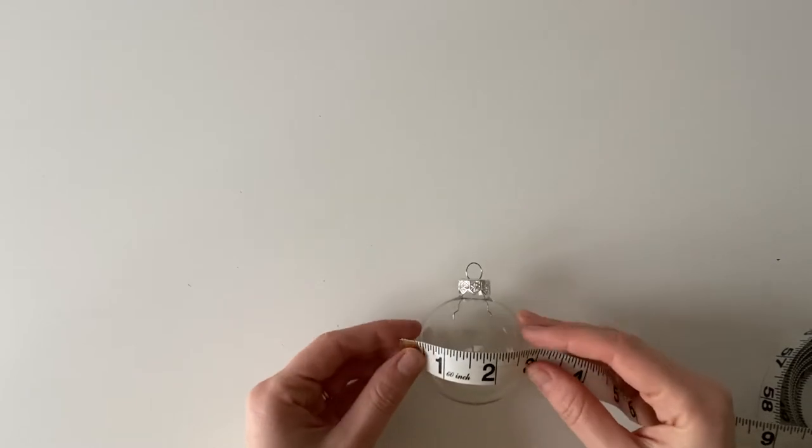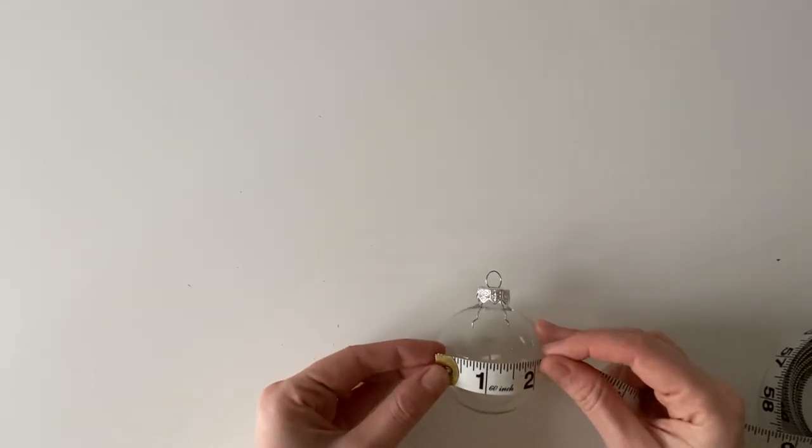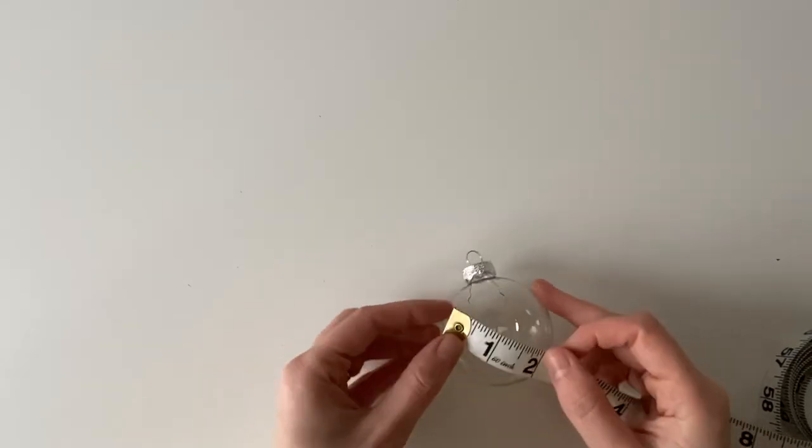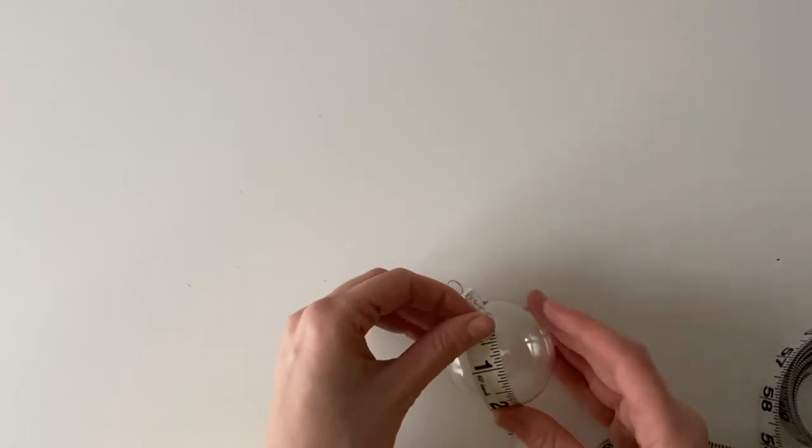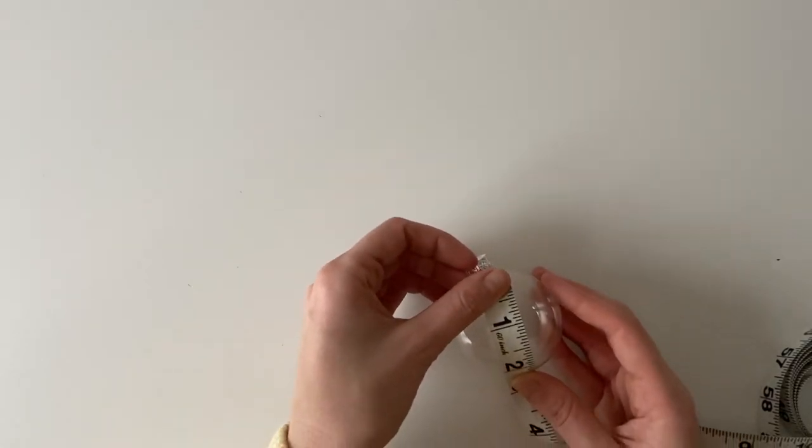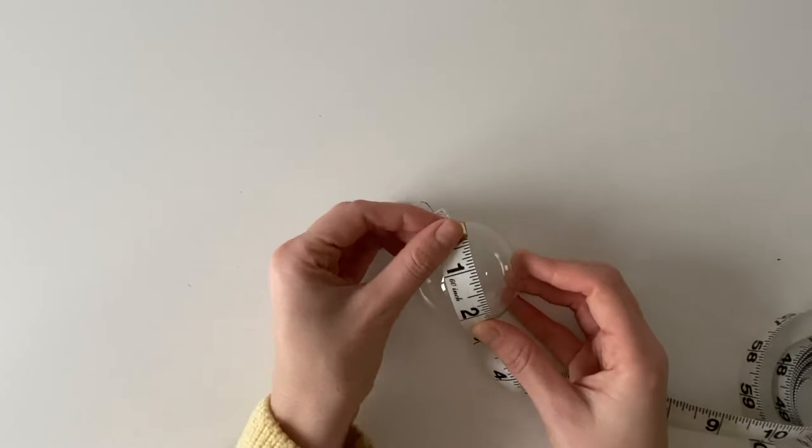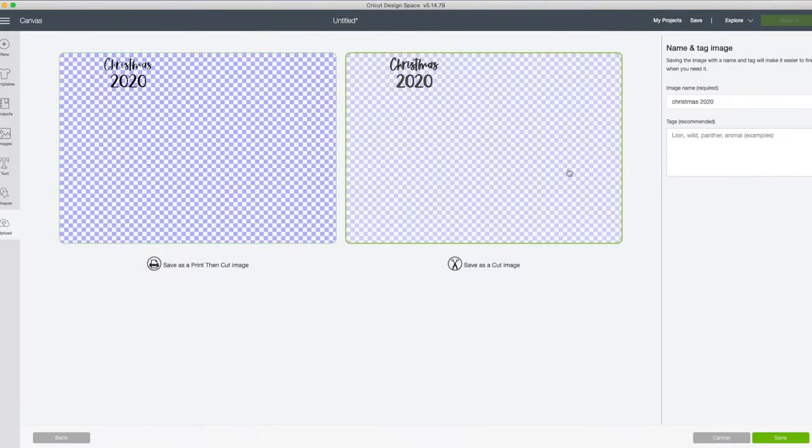First thing I do is measure the bauble just to see how much room I've got. If you don't have a flexible tape measure like that, just use a piece of paper, put a mark on it, and then measure how big that is to see how much room you've got.